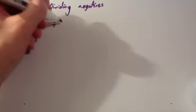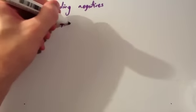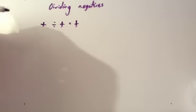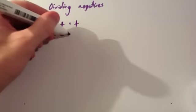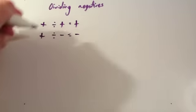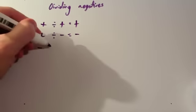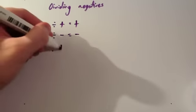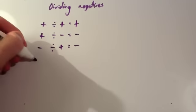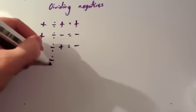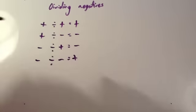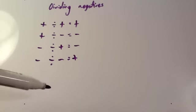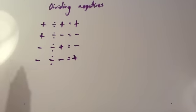Positive divided by positive is a positive answer. Positive divided by a negative is a negative. A negative divided by a positive is a negative. And a negative divided by a negative gives you a positive. These are the same rules as with multiplying, but we're now looking at dividing.